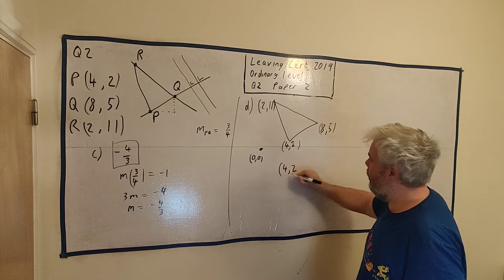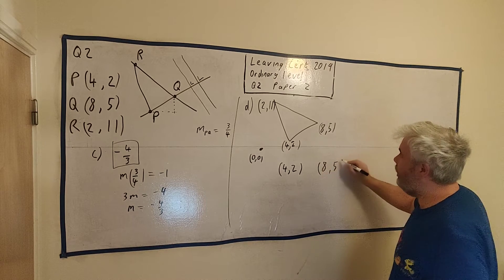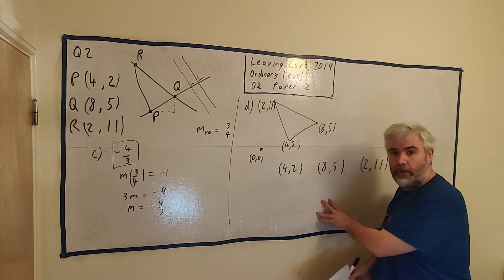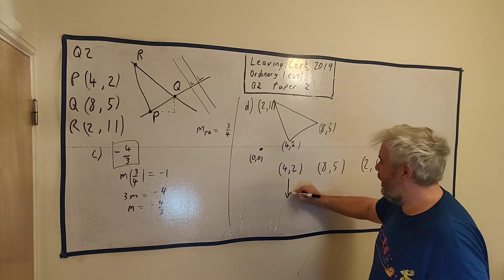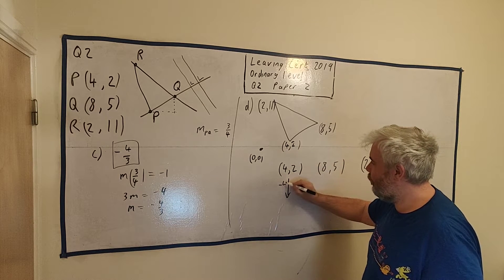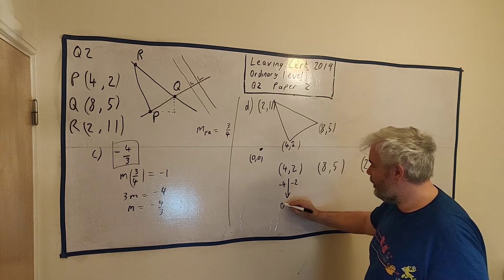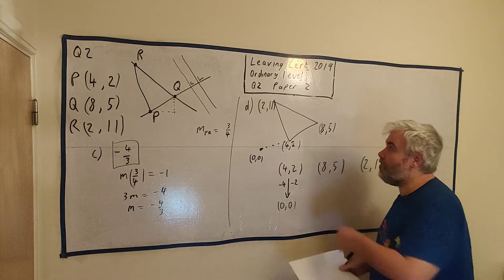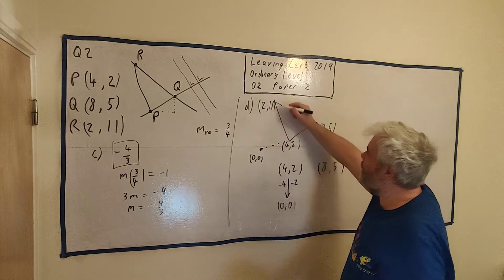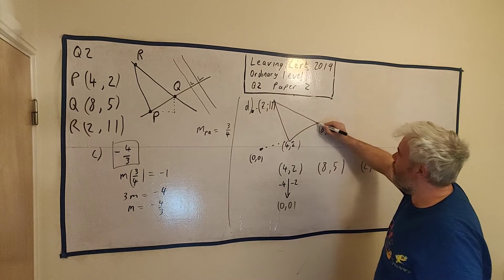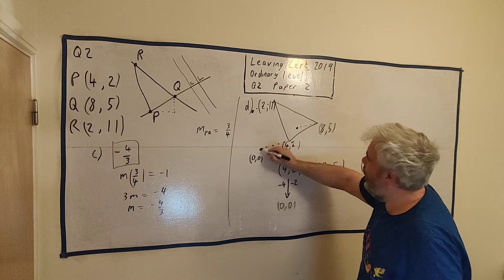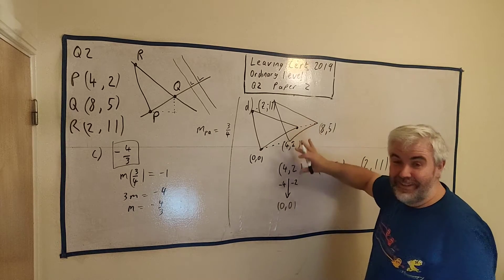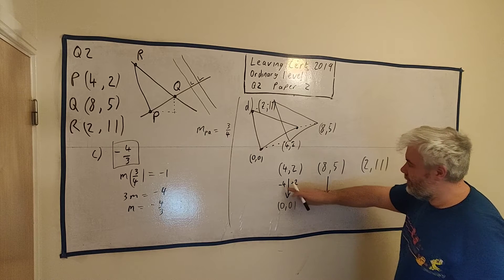I'll write these numbers down again: (4, 2), (8, 5), (2, 11). Let's move this one here, P. We'll take 4 away from the X, minus 4, and take 2 away from the Y, and we'll get (0, 0). In the picture, I'm moving him there. I can't just move them all there, but if I move all points the same way, I'll get another triangle that should look the same.